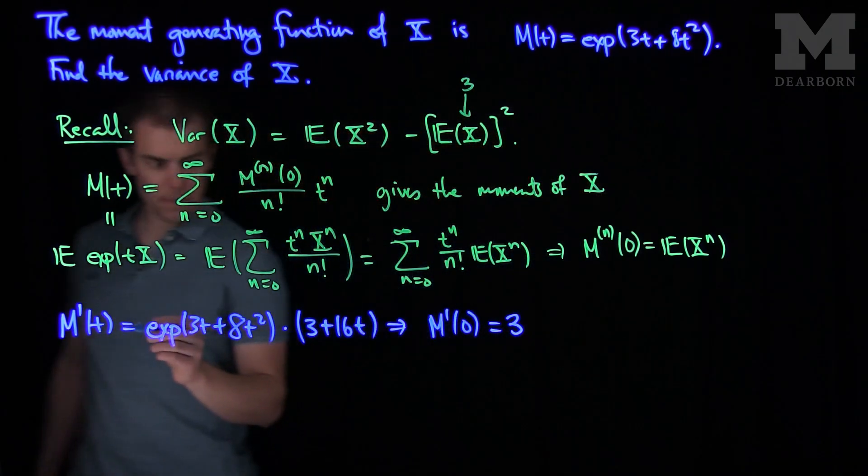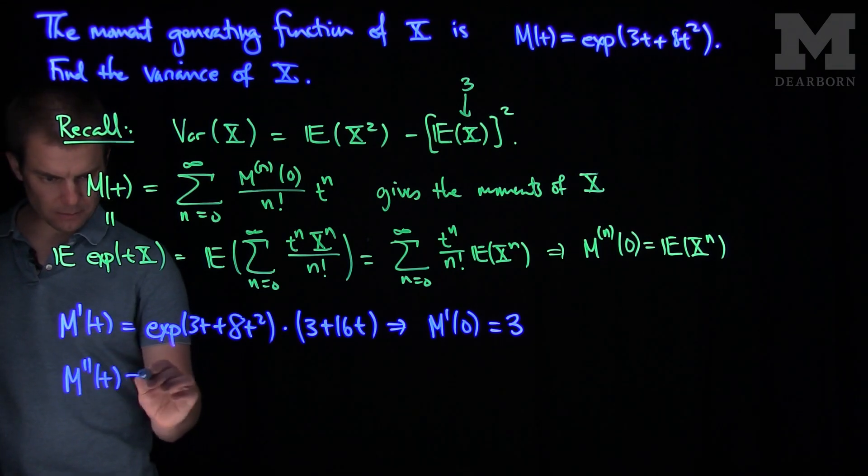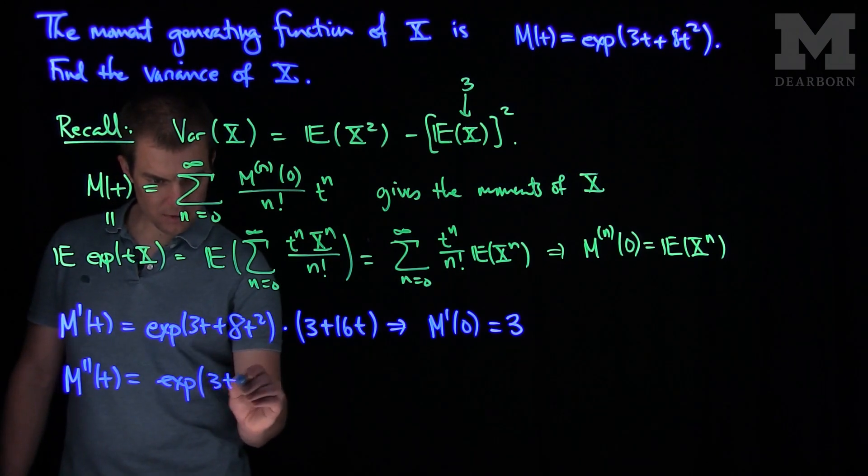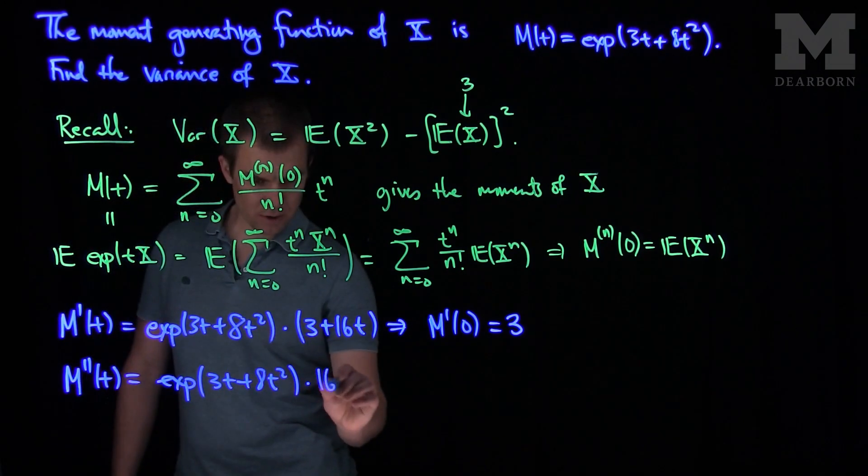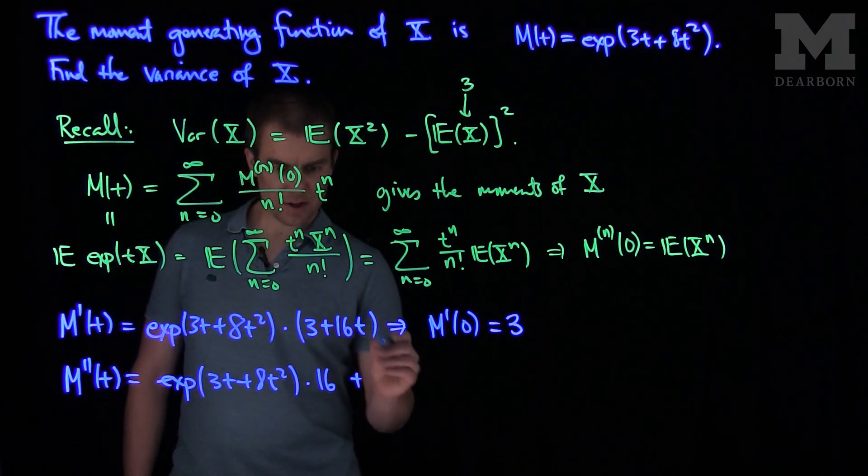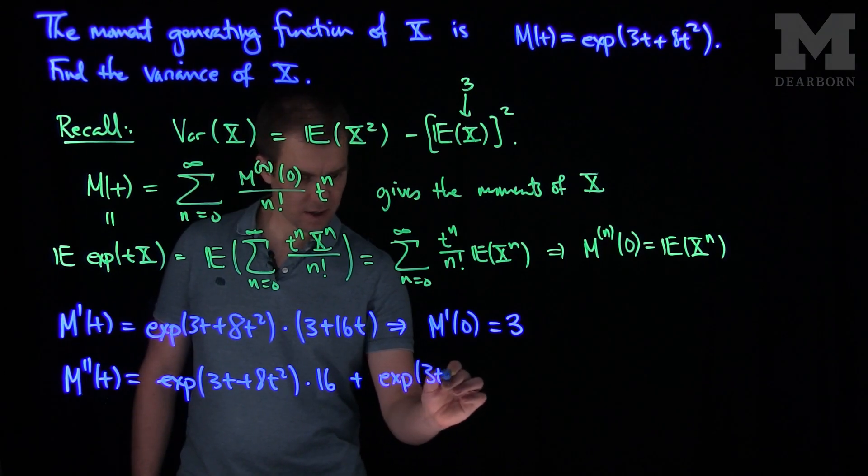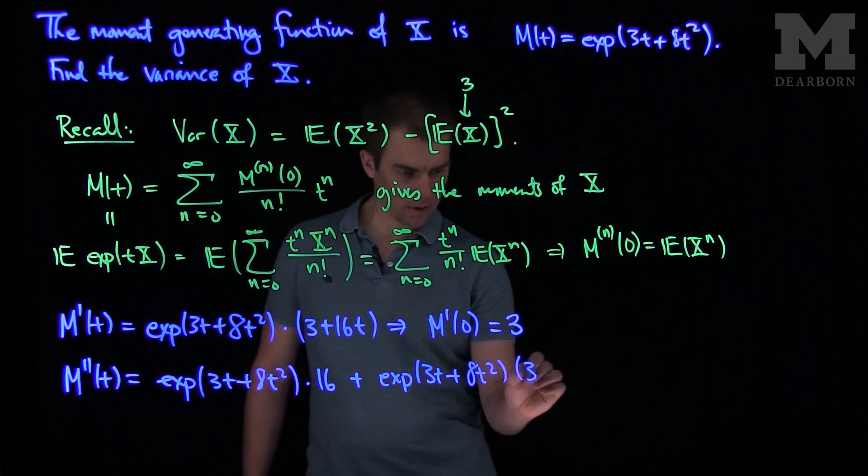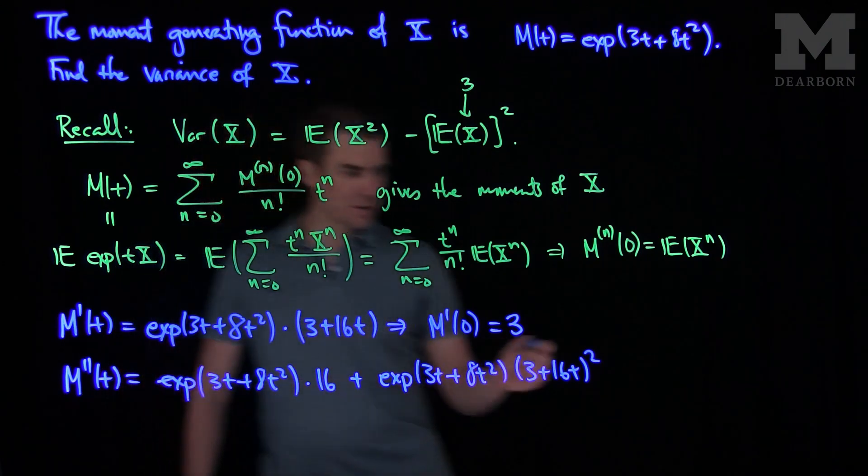Now we compute the second derivative. M''(t) is the exponential of 3t plus 8t squared times 16 plus the exponential of 3t plus 8t squared times the quantity 3 plus 16t squared.